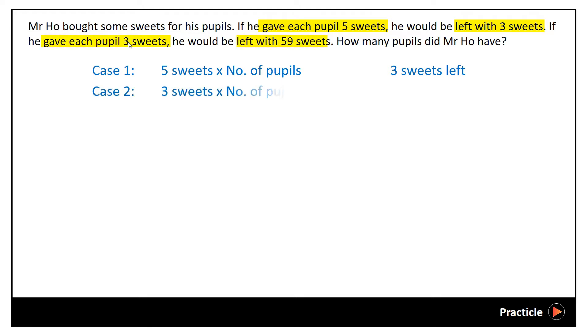So in case 2, the total number of sweets that he has, which is the same as case 1, would be 3 sweets multiplied by the number of pupils plus the 59 sweets that he was left with.